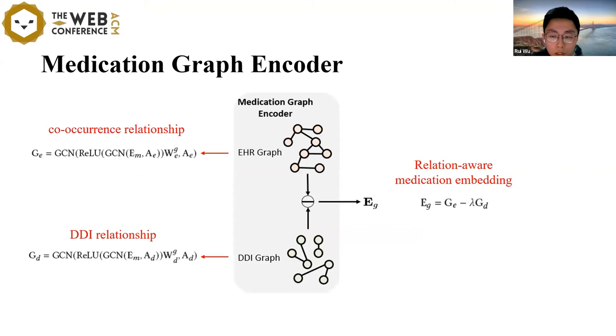The medication graph encoder aims to model two kinds of drug relations: co-occurrence relationship and DDI relationship. Some medications are often prescribed together for better efficacy, so modeling these co-occurrence relations can help the decoder to recommend drugs according to the partially generated medications. On the other hand, some medications have DDI and cannot be used together. So when recommending a new drug, the decoder should avoid that it is conflicted with the past recommended drug. Modeling these two relations can help to recommend a safe and effective medication combination. Inspired by previous work, we use the graph convolutional network to model these two kinds of relations based on the medical graph.